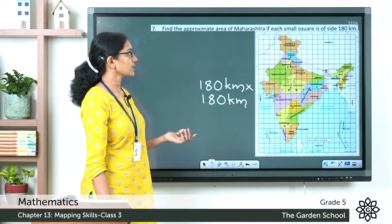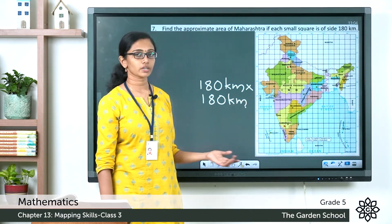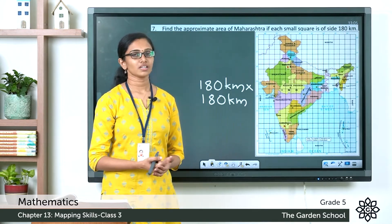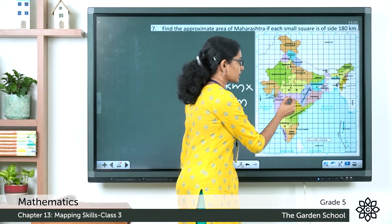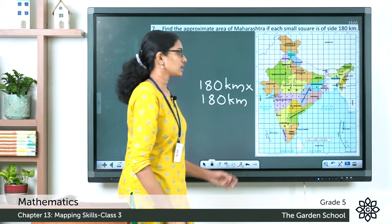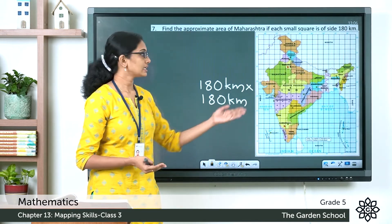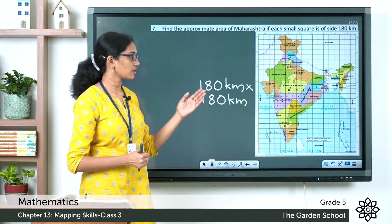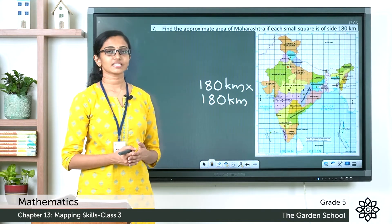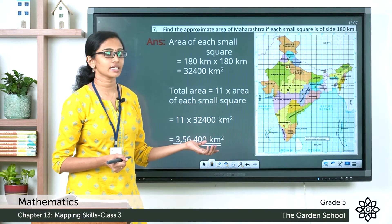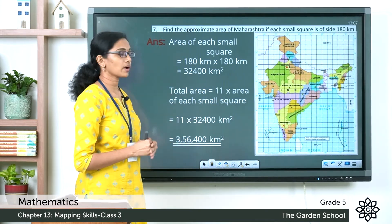You are asked to find the approximate area of Maharashtra. Count the squares covered in full or more than half by the boundary of this state: one, two, three, four, five, six, seven, eight, nine, ten, eleven — there are eleven squares. The area of each small square is 180 km × 180 km, which equals 32,400 square kilometers.